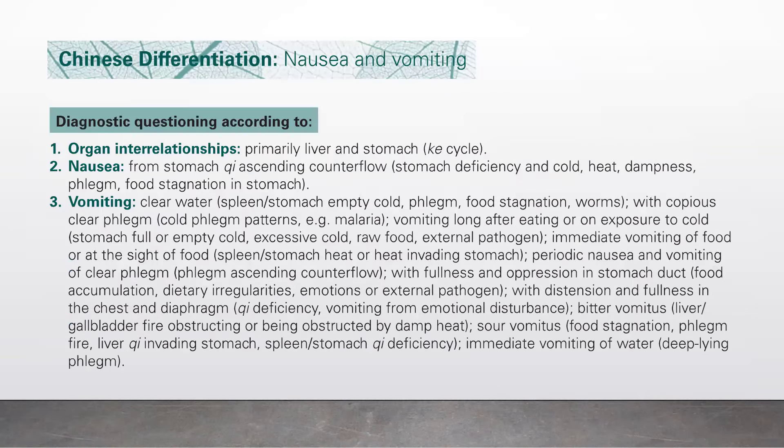Diagnostic questioning according to TCM: number one, organic interrelationships, primarily liver and stomach — the care cycle. Number two, nausea from stomach chi ascending counterflow; stomach deficiency in cold, heat dampness, phlegm, food stagnation in stomach.